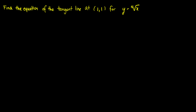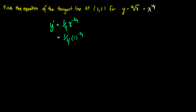For the second example, we want to find the equation of the tangent line at (1, 1) for y equals the fourth root of x, which is equivalent to x to the 1/4. We find the derivative y prime, which is (1/4) times x to the negative 3/4. Plugging in x equals 1 gives us (1/4) times 1 to the negative 3/4, which equals 1/4.